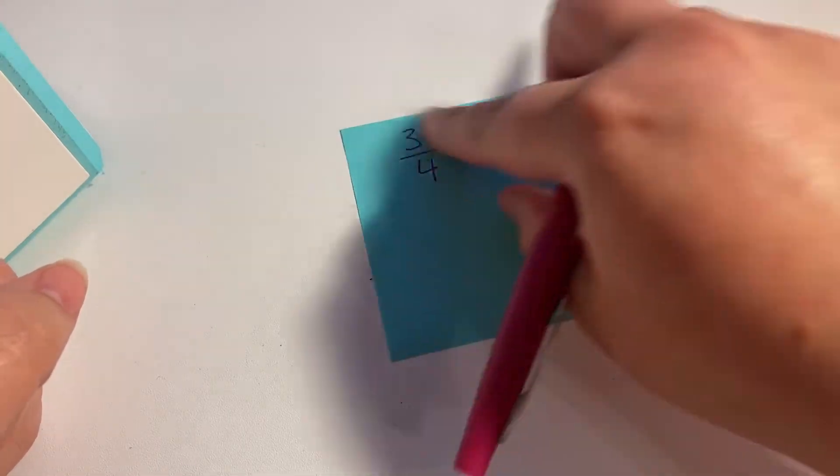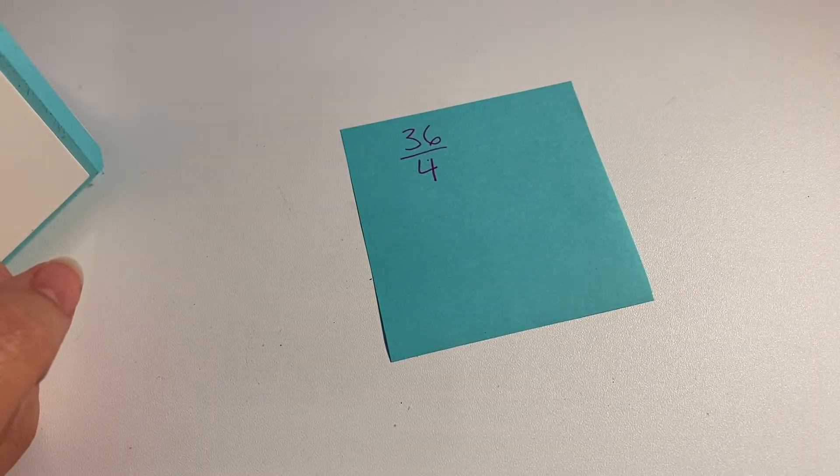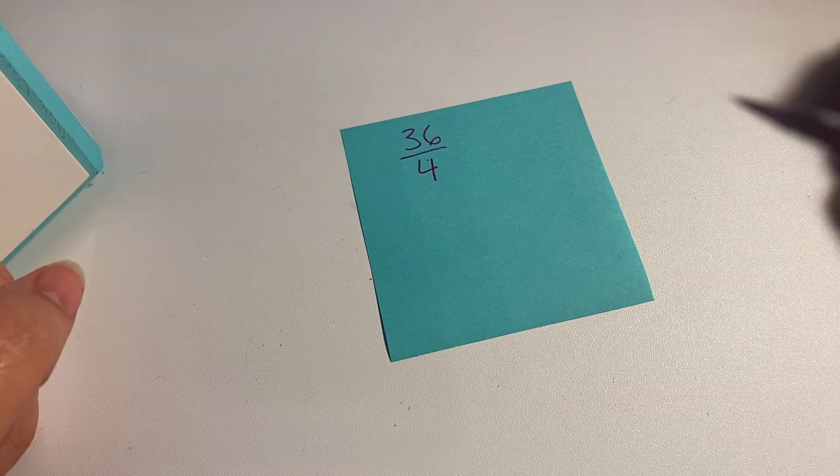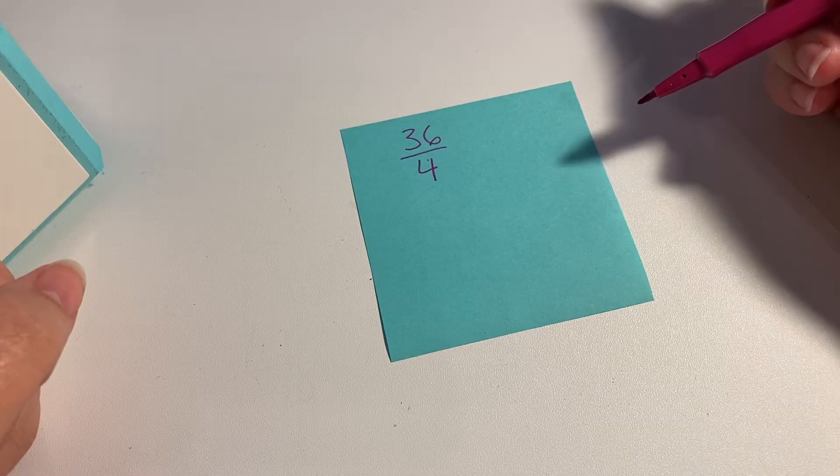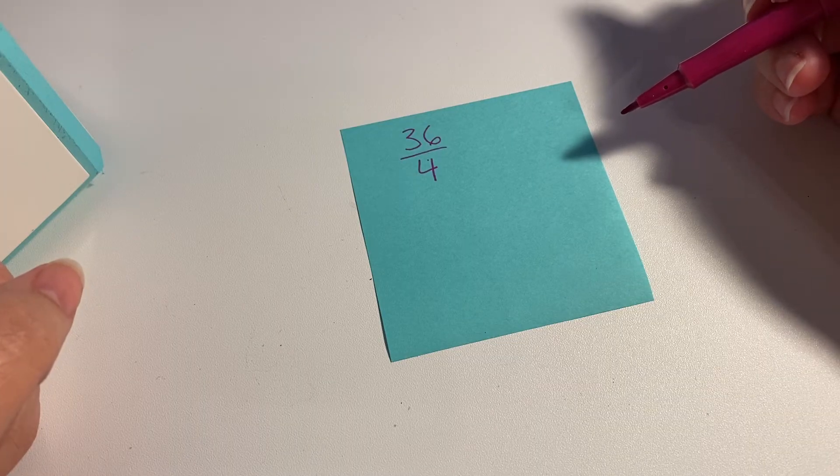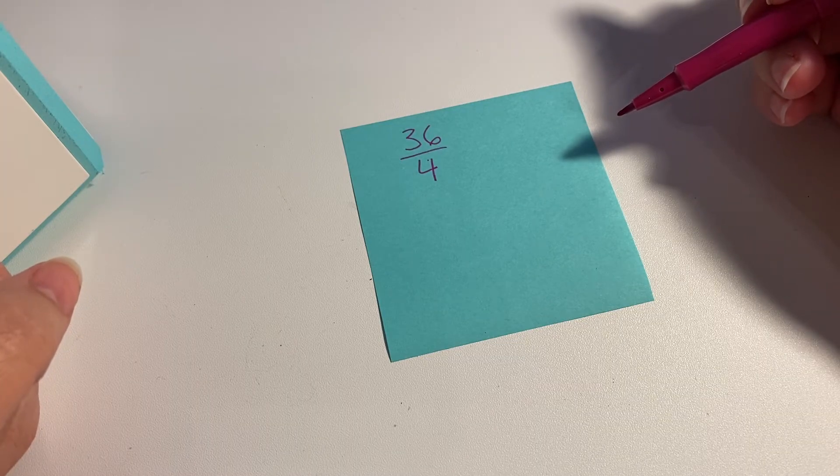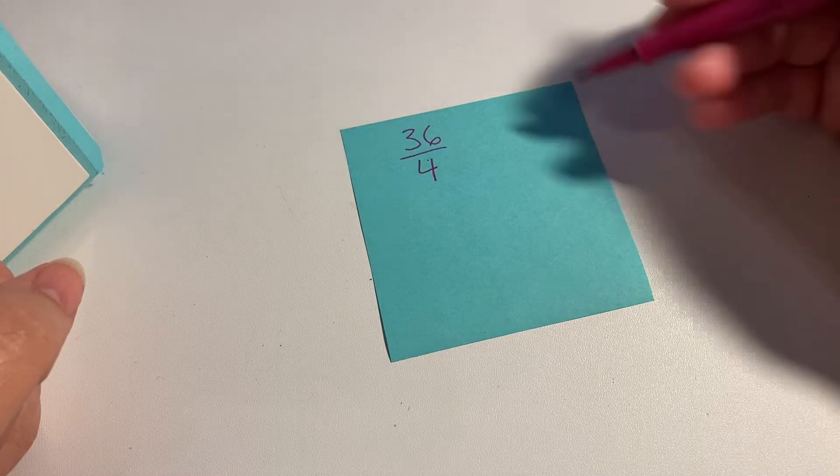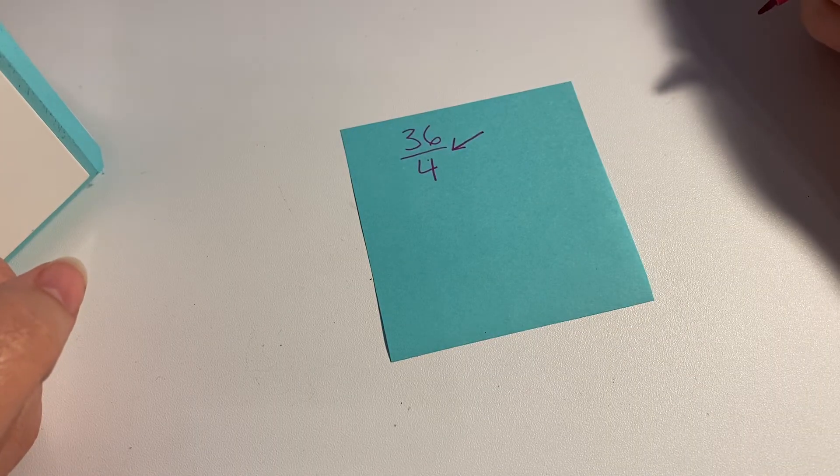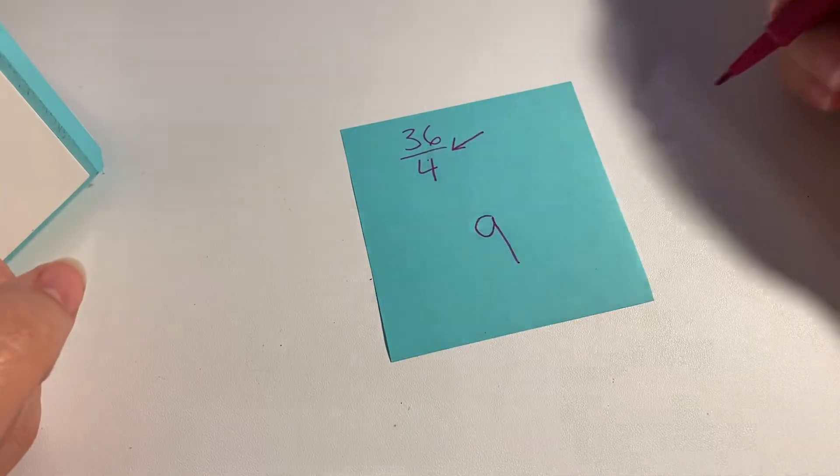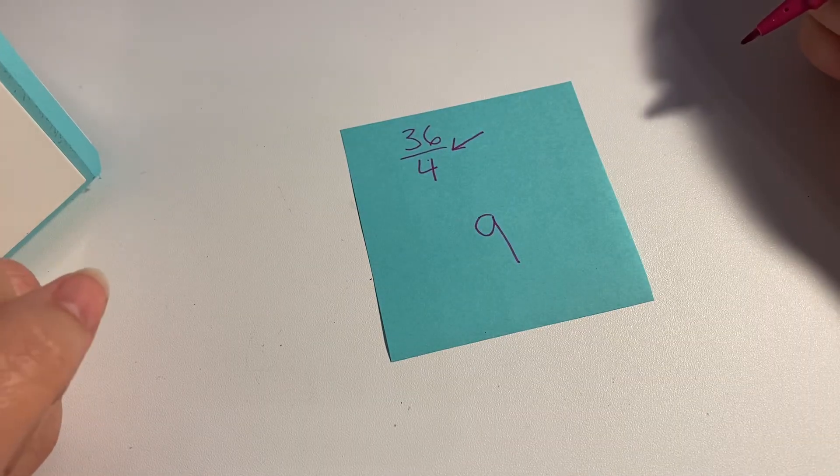What about 36 fourths? Well, we know that four goes into 36 evenly, so we know that this is going to result in a whole number. So 36 divided by, don't forget our divided by there, 36 divided by four is nine. So that's how you simplify it. Easy peasy.